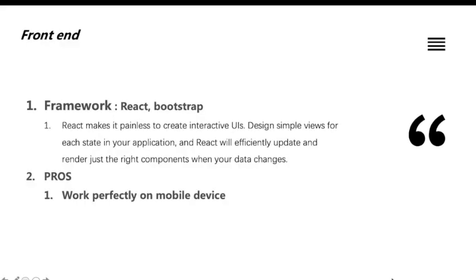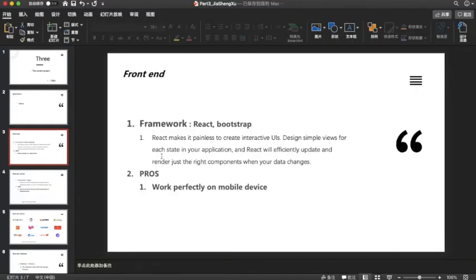Now I'll introduce the framework — the frontend and backend construction. For the frontend, we decided to use React and Bootstrap. Bootstrap is a framework created by Twitter. It is very useful, simple, and easy to use. It makes your website fit even on mobile applications, which is important since more and more people use their mobile phones to browse websites. When visiting the Kean website on mobile, it only shows a desktop view that doesn't fit the screen.